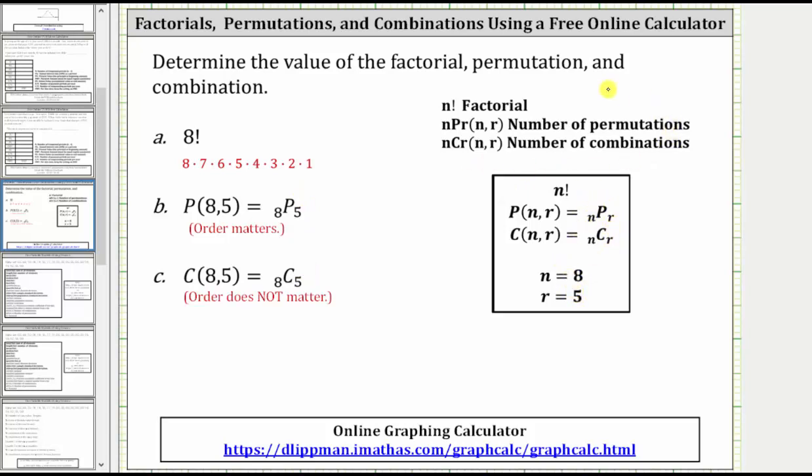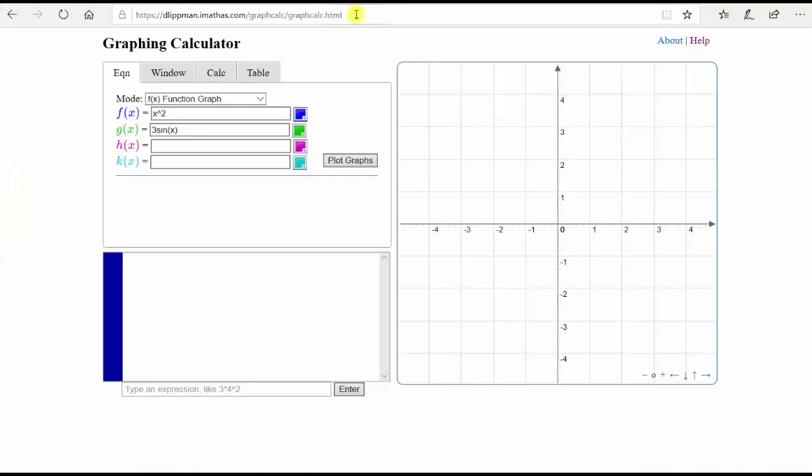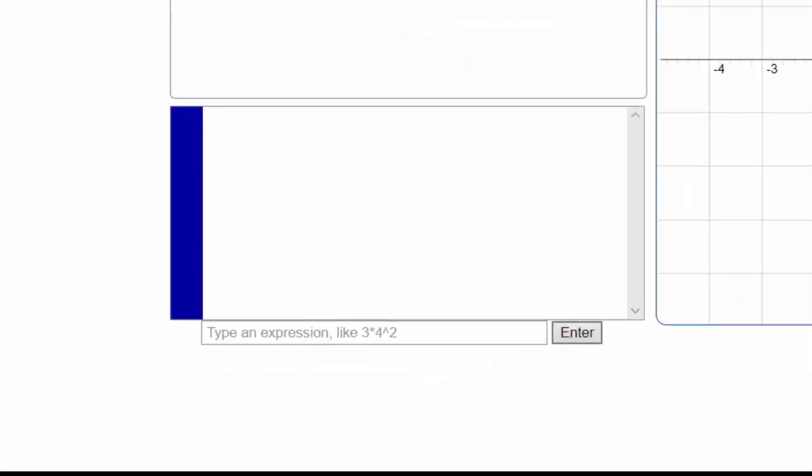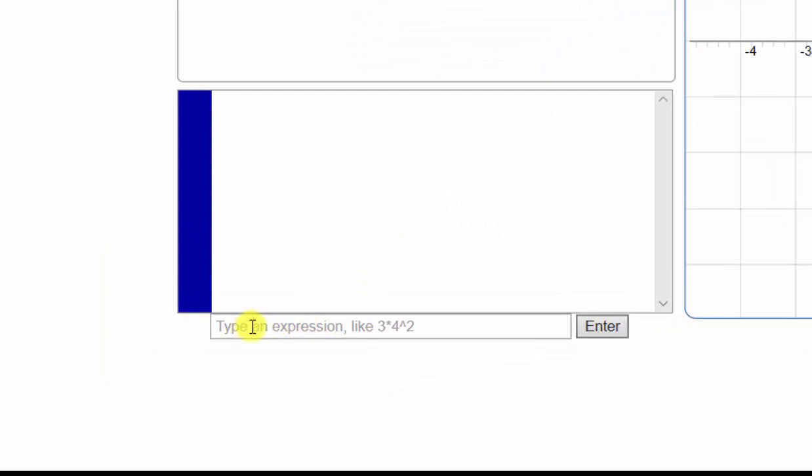We will use this notation on the online graphing calculator. Let's go to the calculator. This calculator has many features. In this video, we are only focusing on factorials, permutations, and combinations. We go down to the very bottom cell where it says type an expression and click inside.